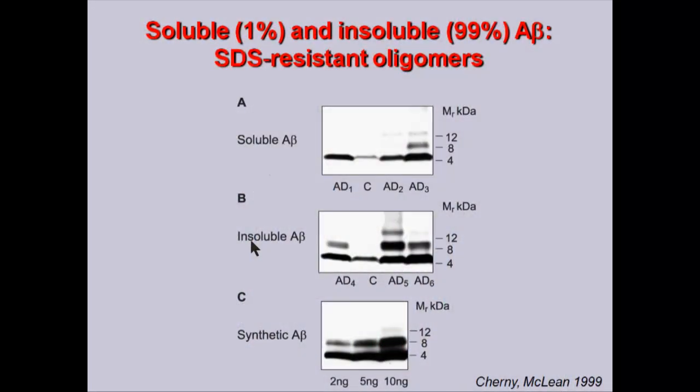If you take the brain of a person with Alzheimer's disease and divide it into the soluble fraction and the insoluble fraction and do a western blot for the A-beta protein, in the soluble fraction you find 1% of the total A-beta. The 99% of A-beta is locked away in these plaques, where you can see the monomer, dimer, and trimer in Alzheimer's disease. But it is the 1% soluble fraction that correlates with the amount of synaptic damage at the time of death. Remember, this is a process that goes on over 10 to 20 years, so what we look at in post-mortem material is very much end-stage brain.